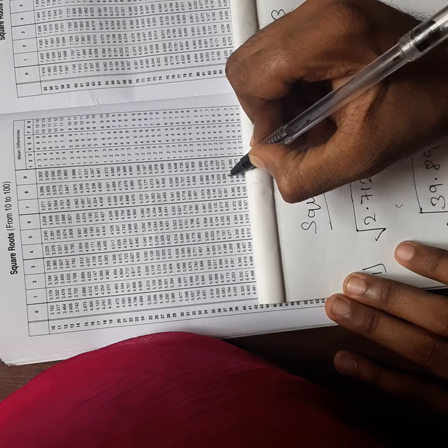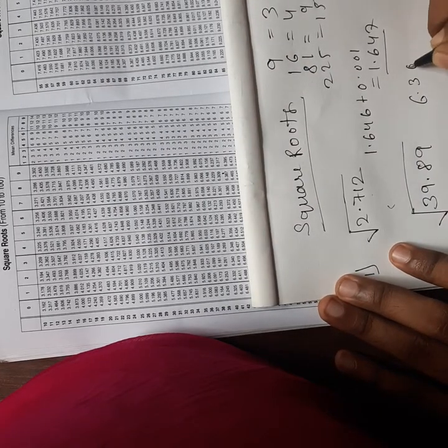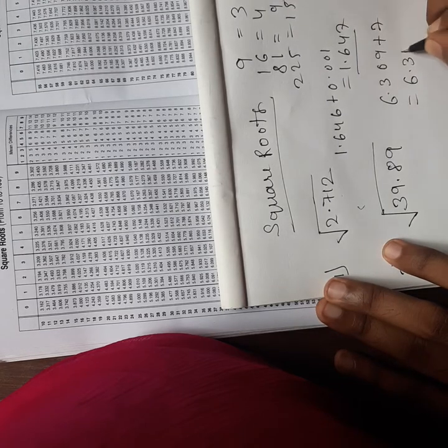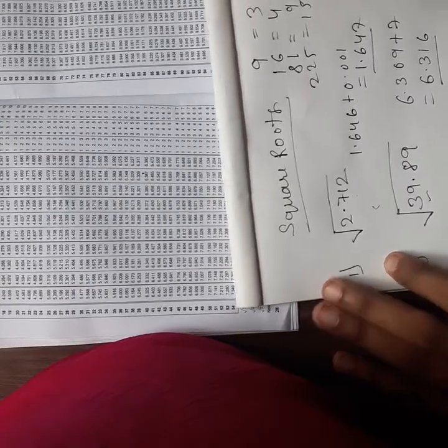And for the last number 9, in column 9 it is 7. So 6.309 plus 7 will be 6.316. So this is my square root of 39.89. I hope it is clear for you.